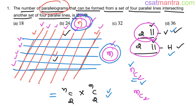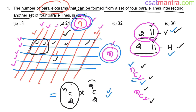This is the beauty of permutation and combination — you cannot manually calculate all these parallelograms. Permutation and combination makes your life easier; it's a smart way of counting. We select two lines out of n lines and two lines out of m lines, and 'and' is replaced by multiplication in permutation and combination.